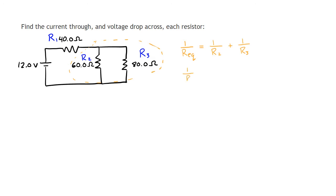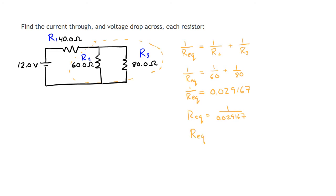Filling in those values: one over 60 plus one over 80. In these problems it's almost always easier and faster to compute these as a decimal. Adding one over 60 plus one over 80 in my calculator gives 0.029167. That's one over REQ. So now I flip that fraction: REQ equals one over 0.029167, which gives REQ equal to 34.29 ohms.